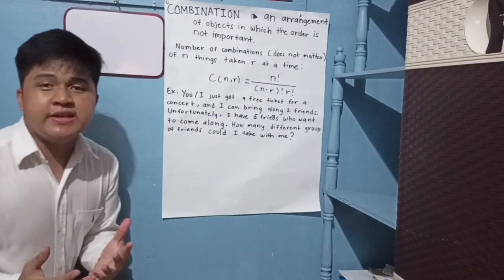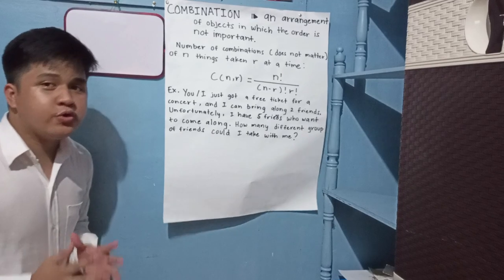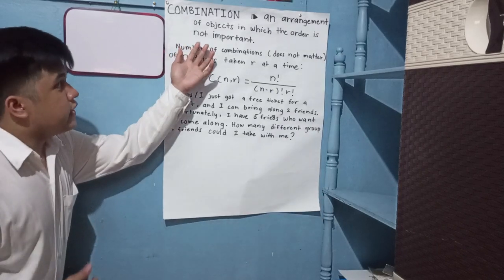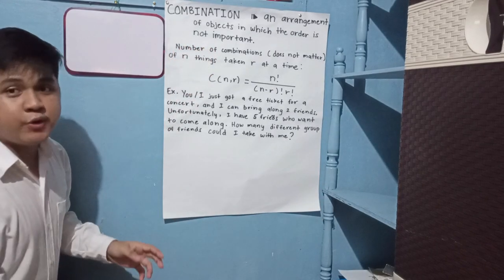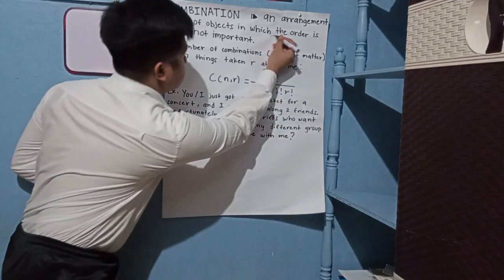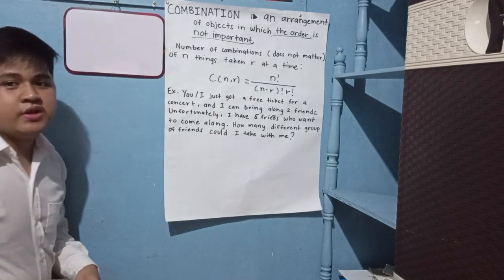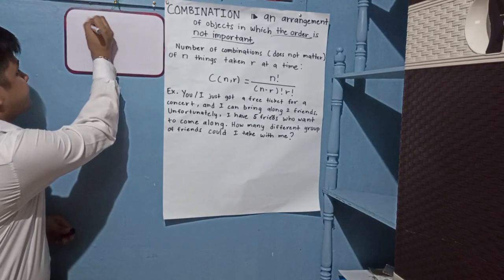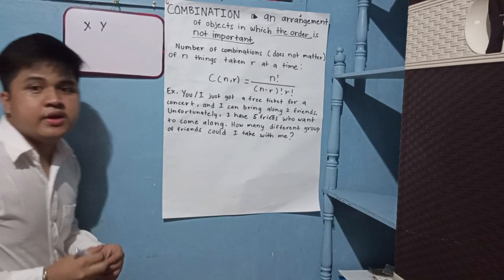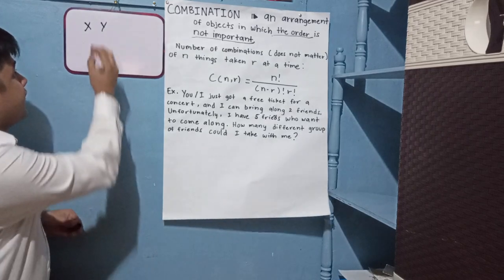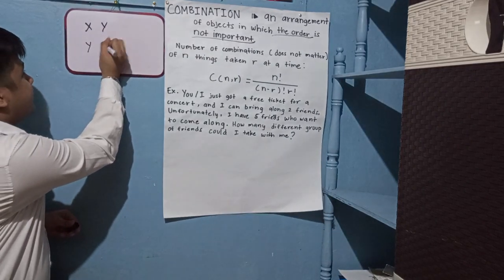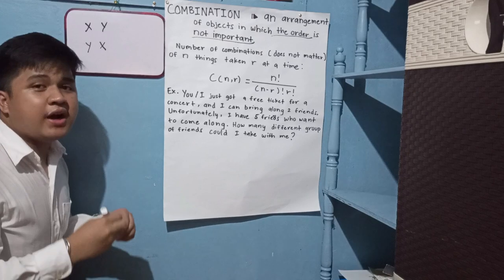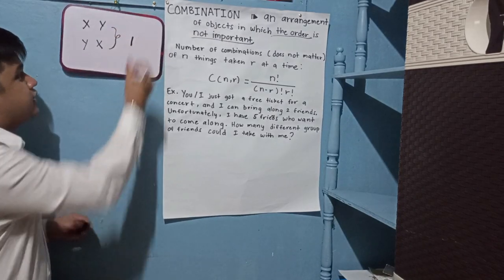So to emphasize: combination is an arrangement of objects in which the order is not important. For example, if we have letters X and Y, we can generate X and Y, and also Y and X. But these two combinations of letters are counted as one only.